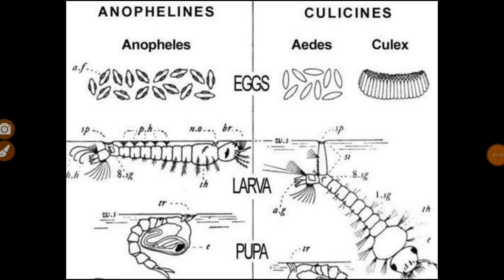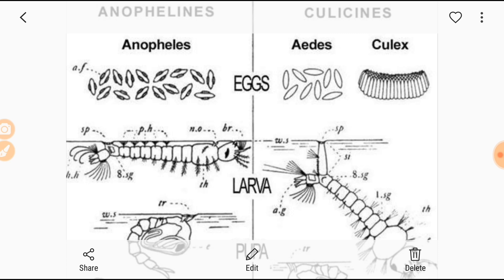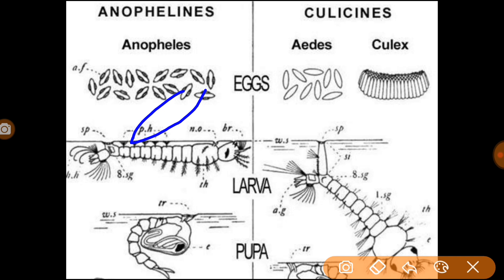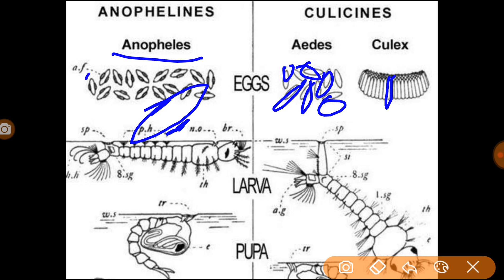There are two main types of mosquito — Anopheles and Aedes. The egg of the female Anopheles looks like a boat-shaped structure — it is a boat-like pattern. The eggs of Aedes are arranged in a bunch, while Culex eggs look like a bunch of cigarettes. The Anopheles eggs are separately arranged.